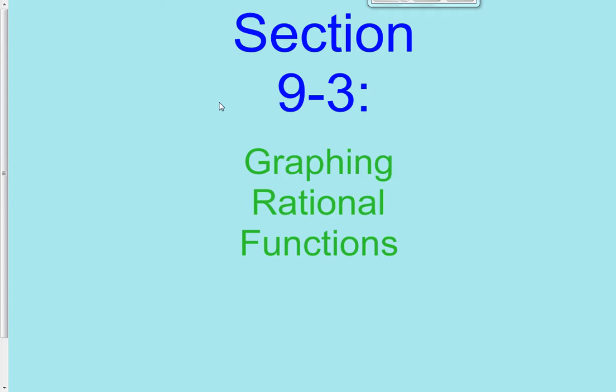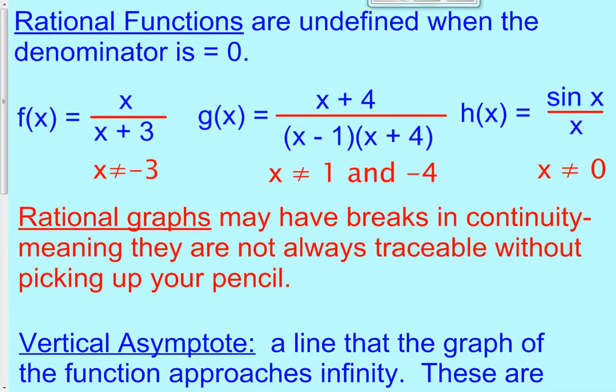A rational function can be identified when you're graphing a fraction, so y equals something, and this fraction has a variable in the denominator. So the letter x is in the denominator. That's how you always know if you're graphing a rational function — when you have a denominator with a variable in it.